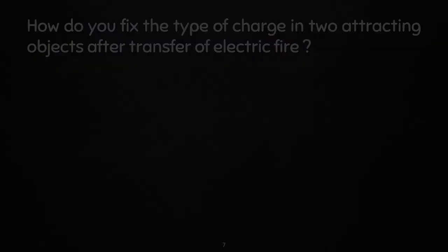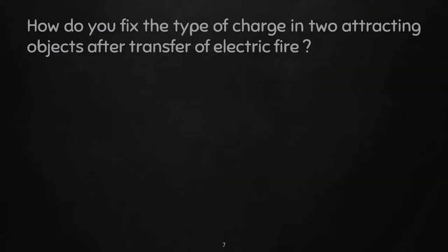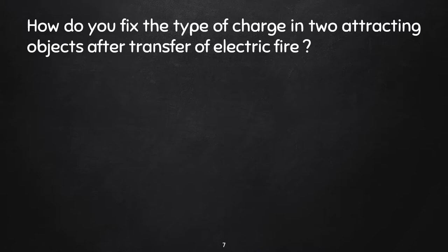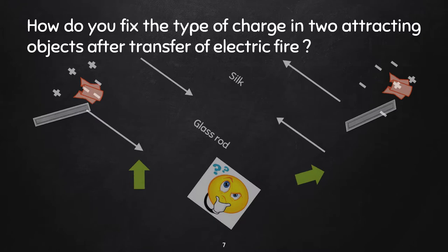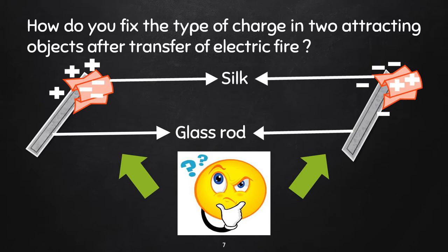Another question can be: how do you fix the type of charge in two attracting objects? Let us look at an example. We take a piece of glass rod and silk and rub one another. Now which will possess positive charge and which one will have negative charge? How to decide?